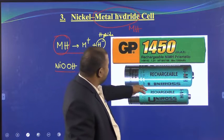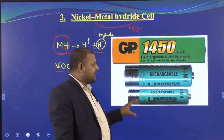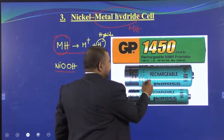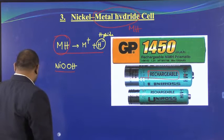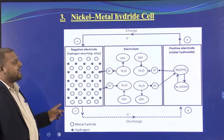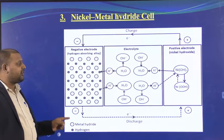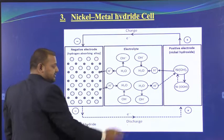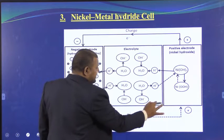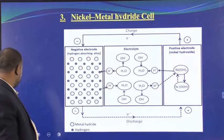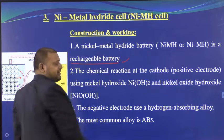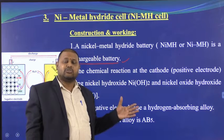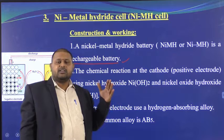This diagram shows the mechanism of electron flow during charging and discharging of the nickel metal hydride battery. During charging, one reaction takes place; during discharging, the reverse takes place. The nickel metal hydride battery is again a rechargeable battery. You should compare it with the nickel cadmium battery — both are rechargeable.